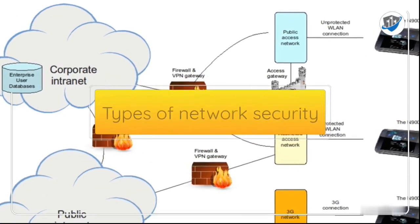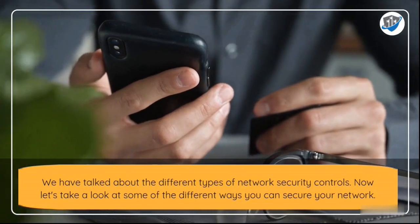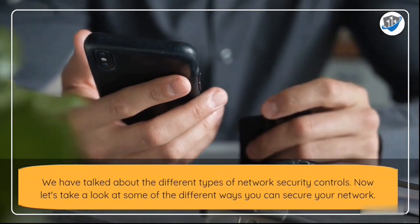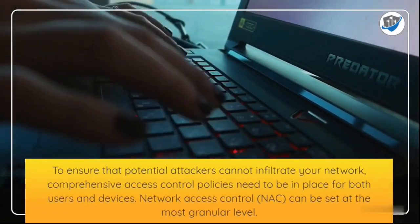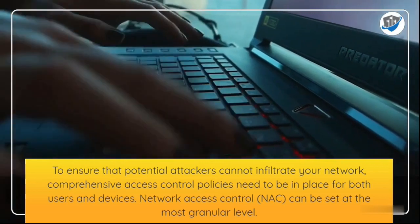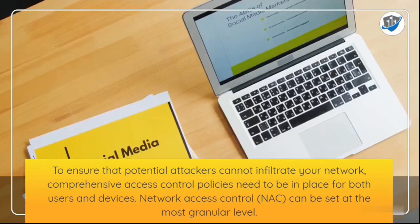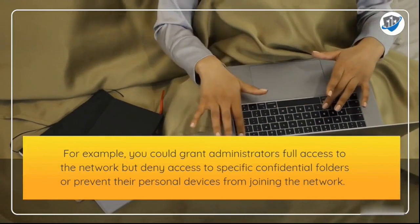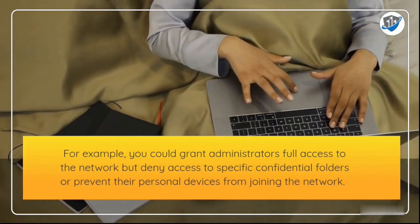Now let's take a look at some of the different ways you can secure your network. Network access control: to ensure that potential attackers cannot infiltrate your network, comprehensive access control policies need to be in place for both users and devices. Network access control can be set at the most granular level. For example, you could grant administrators full access to the network but deny access to specific confidential folders, or prevent their personal devices from joining the network.